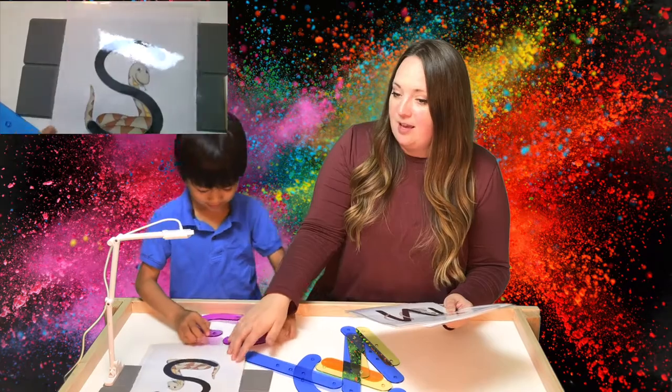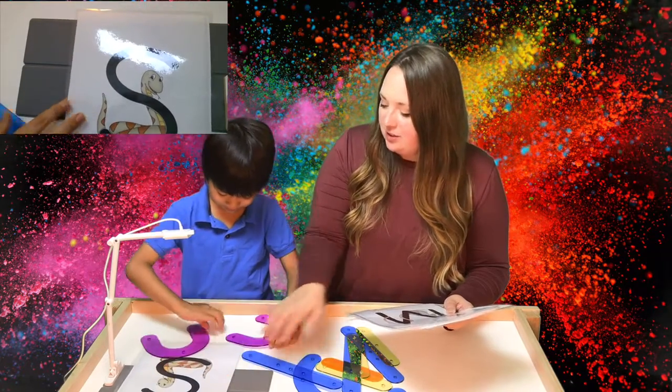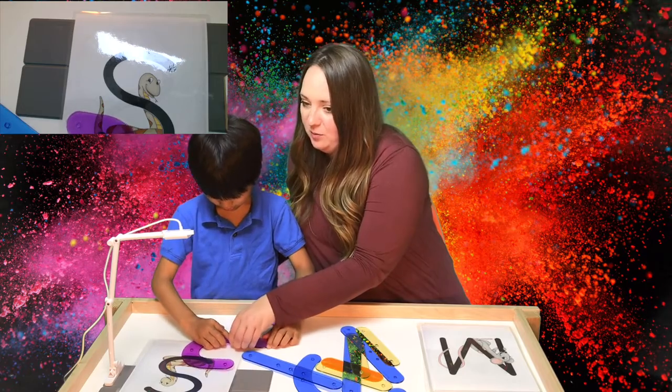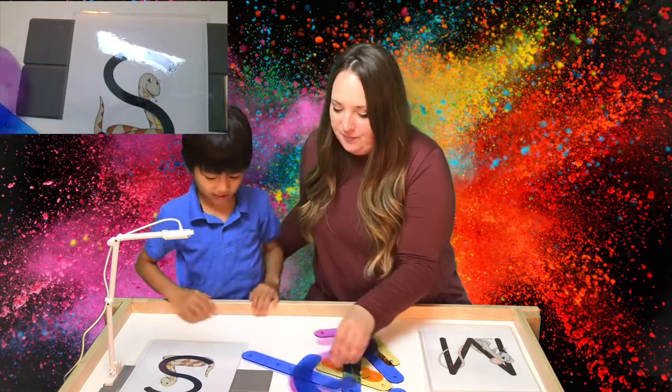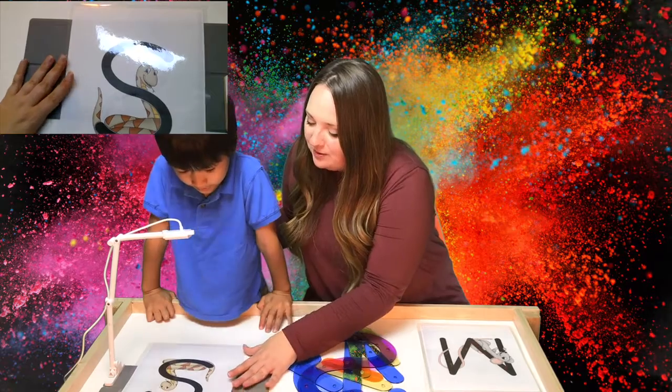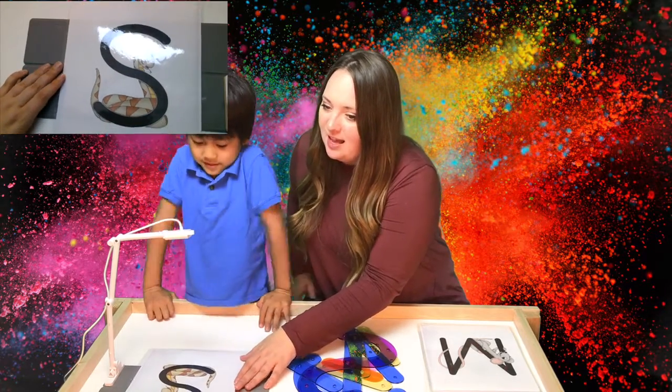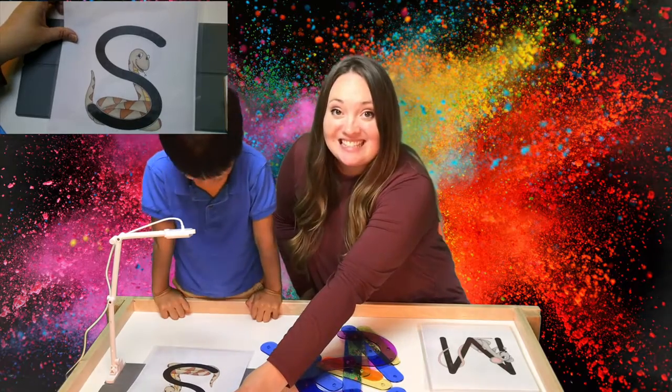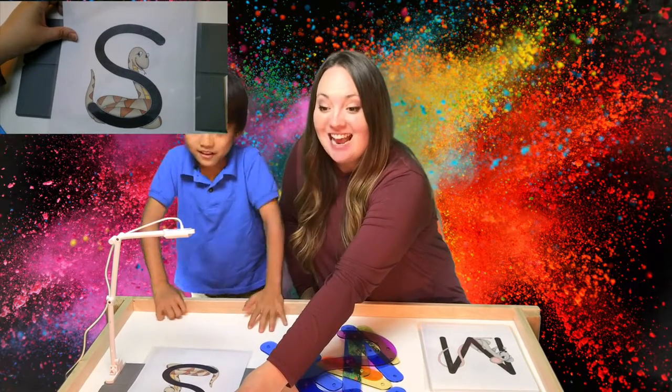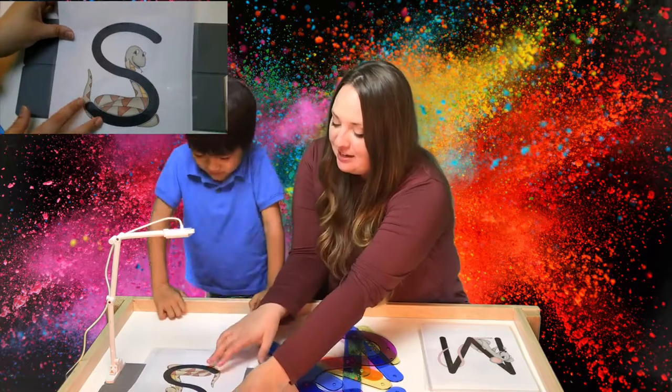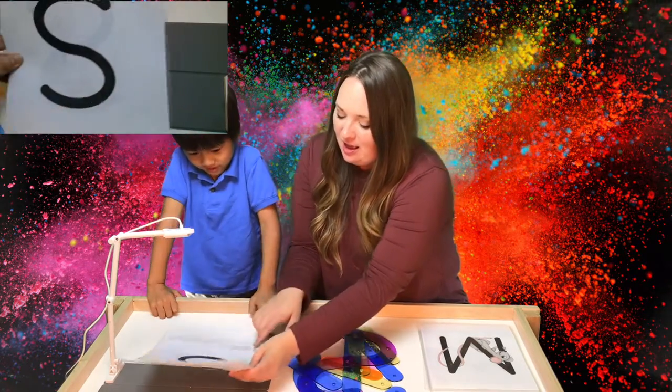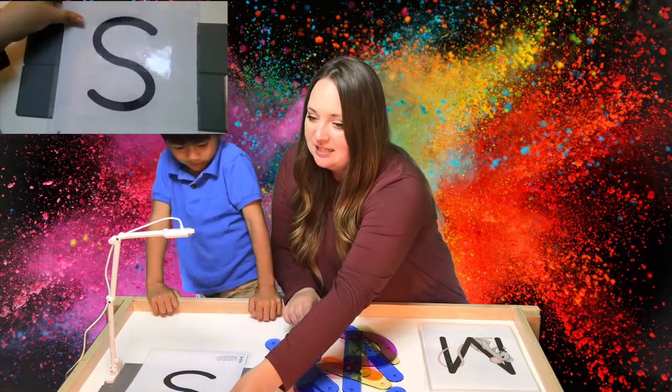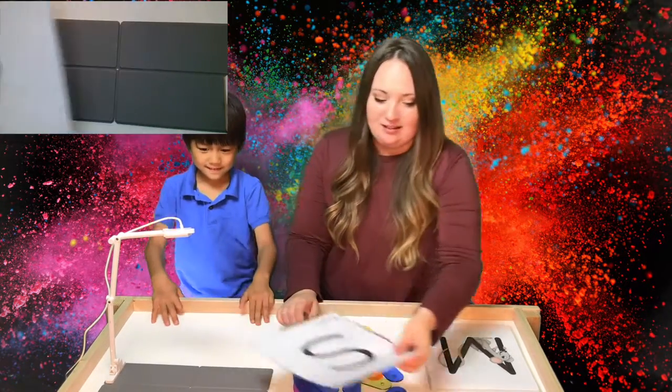So I can make an S. You can? That's great. We'll do that after the cards, okay? So, can you help me tell our friends about this letter? S. What does this letter say? S. That's right. For snake. And you can see our friend here in the picture. Sammy Snake. S.